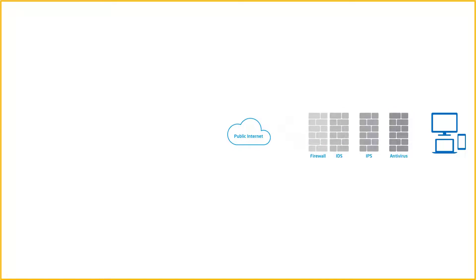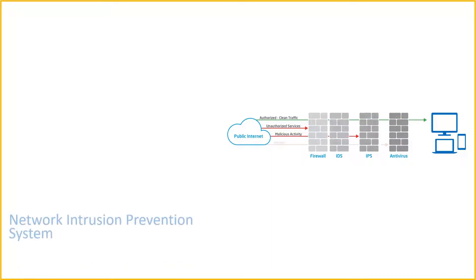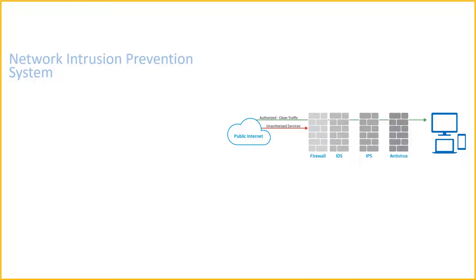There are several types of IPS, each with a slightly different purpose. The first is the network intrusion prevention system (NIPS), which is installed at a strategic point to monitor all network traffic and proactively scan for threats.